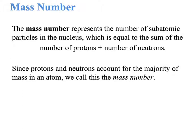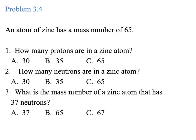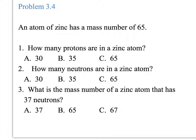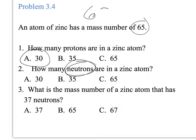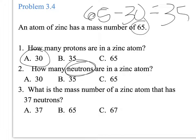The mass number represents the number of protons plus the number of neutrons in the nucleus of the atom. So if we look at the periodic table and we see zinc, it has a mass number of 65. When we look at zinc, the atomic number is 30, meaning that is the number of protons. In order to identify the number of neutrons, we take the mass number — 65 — minus the number of protons, and that gives us 35 neutrons.